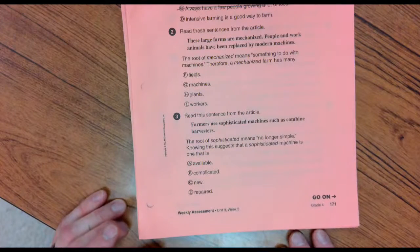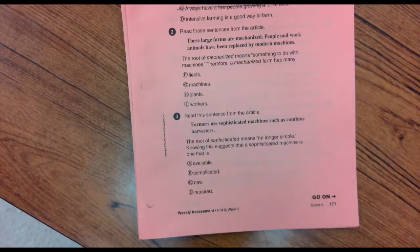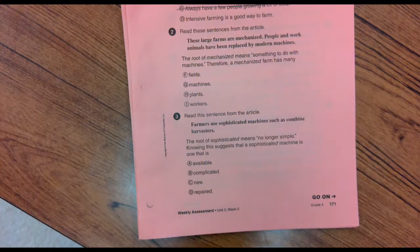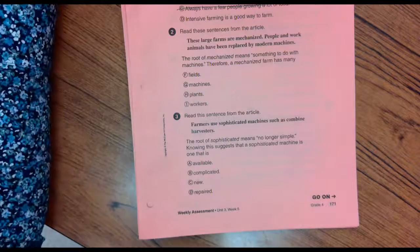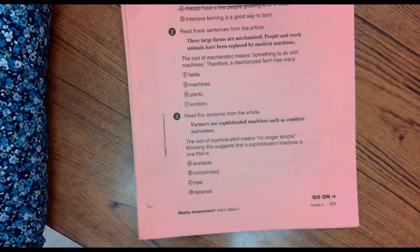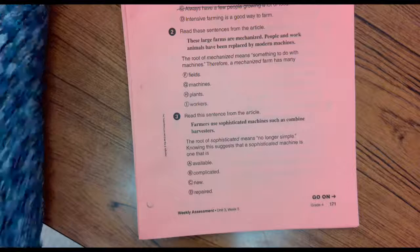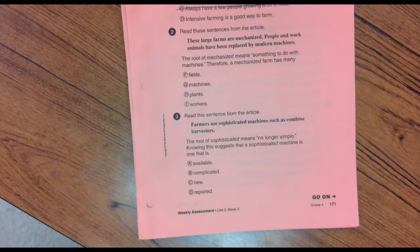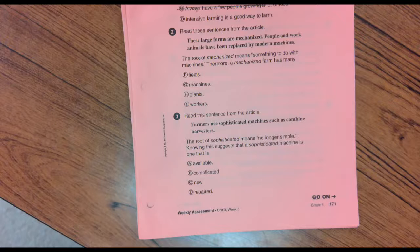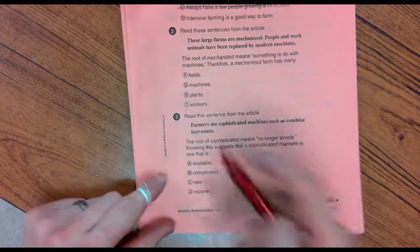Number three, read the sentence from the article. Farmers use sophisticated machines such as combine harvesters. The root sophisticated means no longer simple. Knowing this suggests that sophisticated machine is one that is available, that it is complicated, that it is new, that it's repaired. Don't pick new.